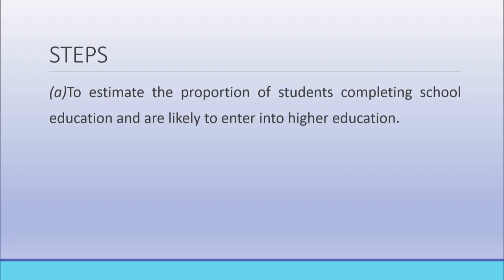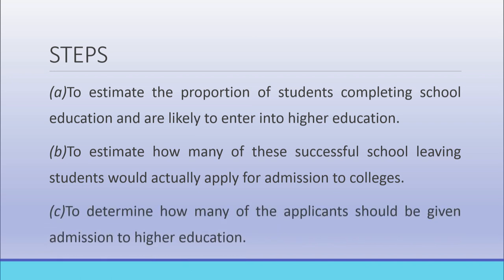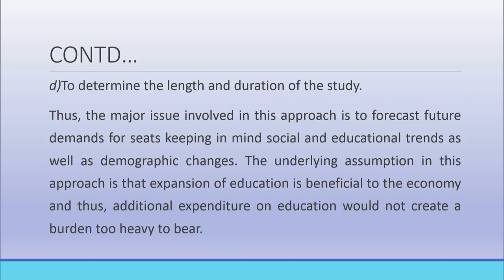The social demand approach involves the following steps: estimating the proportion of students completing school education who are likely to enter higher education; estimating how many of these successful school-leavers would actually apply for admission to colleges; determining how many applicants should be given admission to higher education; and determining the length and duration of study. The major issue in this approach is to forecast future demand for seats, keeping in mind social and educational trends as well as demographic changes. The underlying assumption is that expansion of education is beneficial to the economy and additional expenditure on education would not create a burden too heavy to bear.